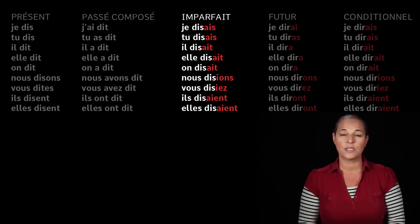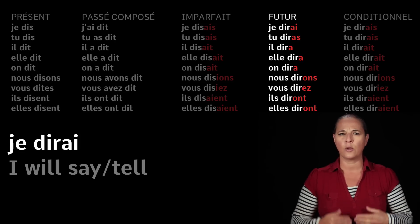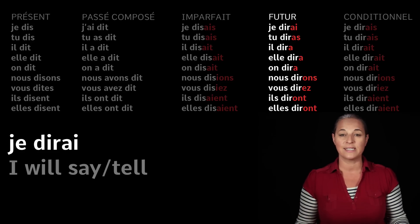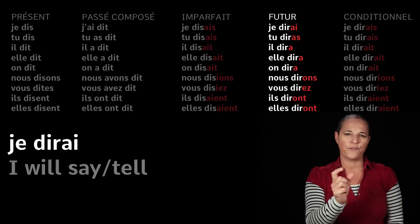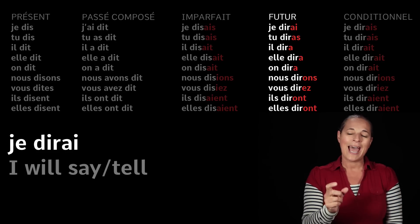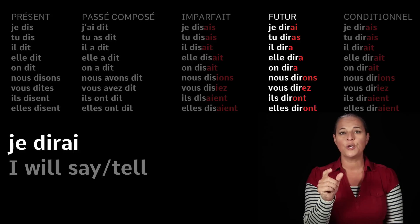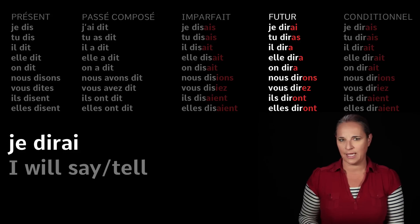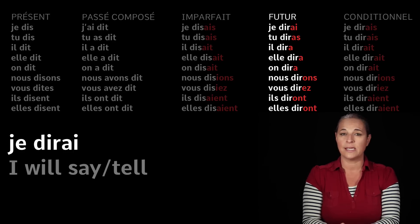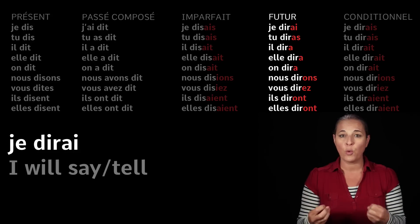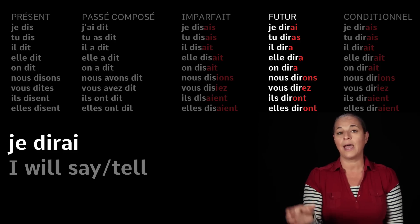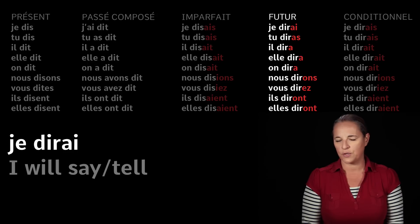Let's have a look at another tense — the future tense. We are going to learn how to say 'I will say'. Remember that in French, we don't have such a thing as 'will' or 'would' or 'could' — it doesn't exist. We use the future stem of that verb, which you need to learn by heart, especially for third group verbs, and then add the endings of the future tense. For dire, use the stem D-I-R and add '-ai' to it — je dirai, I will say.